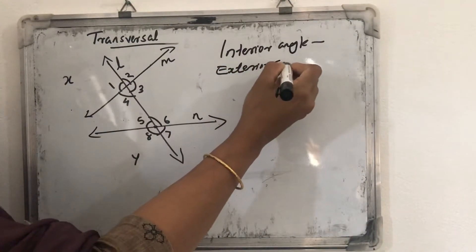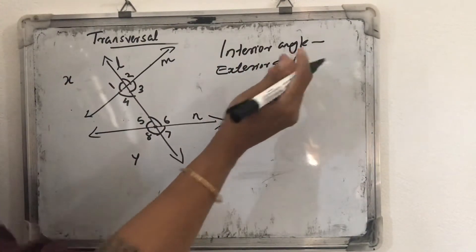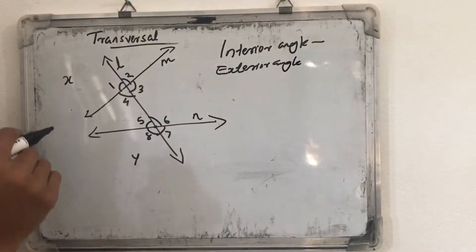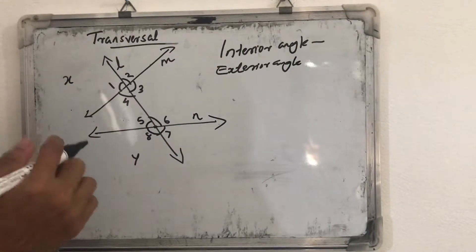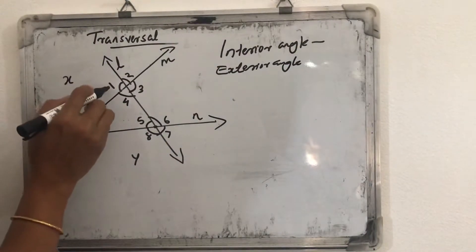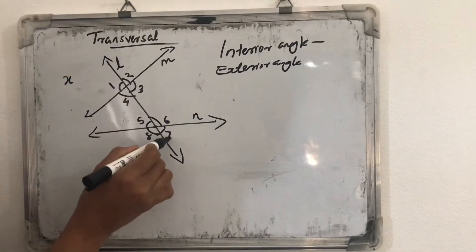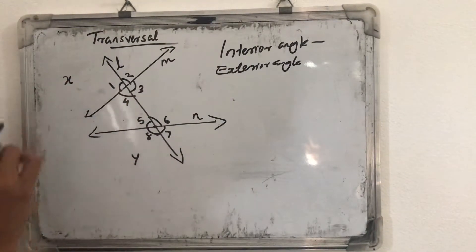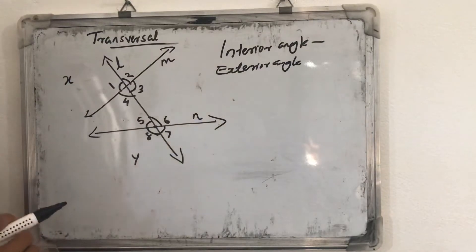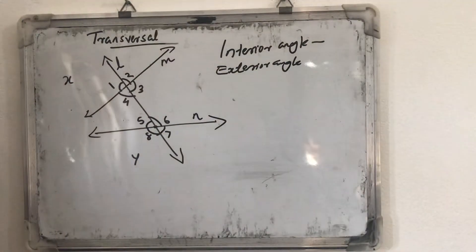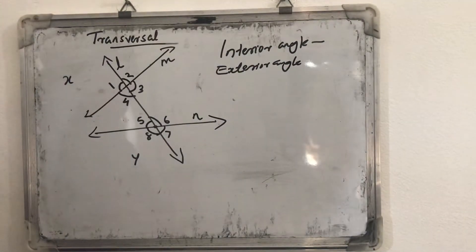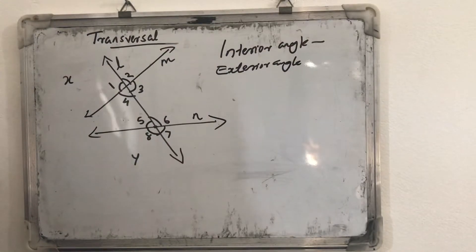Which are exterior angles? That is very easy, you can name them. Angle 1, 2 and angle 7, 8 — they are exterior angles. From the name itself it is very clear.